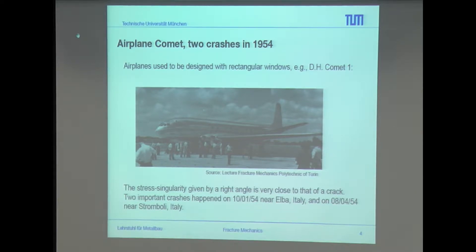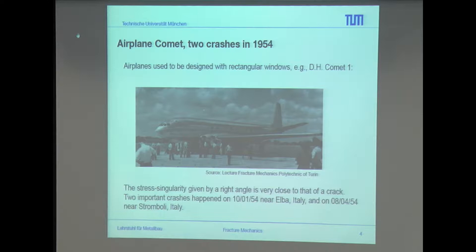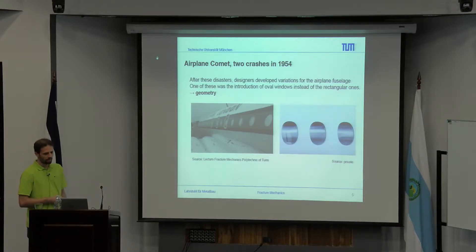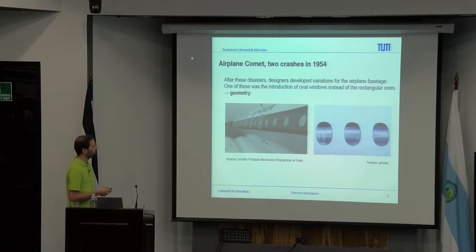Another accident is the airplane Comet which crashed in 1954. There, stress singularity appeared very close to that of a crack, and afterwards two crashes happened. What was found was that the windows were quite rectangular, giving a high stress concentration due to the shape of the window. The solution was to give the window shape a more curvy design, which allowed them to handle these disasters and the scratches, leading to a better improvement.